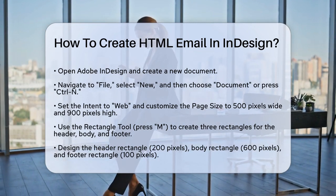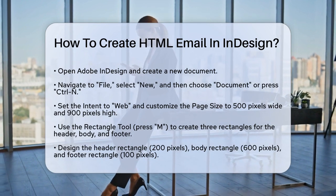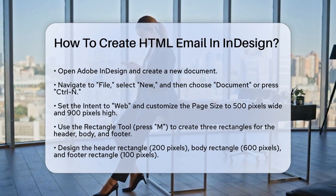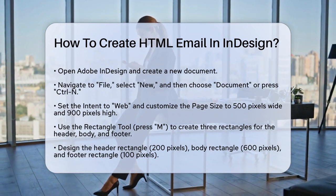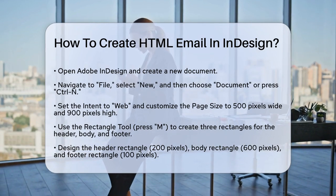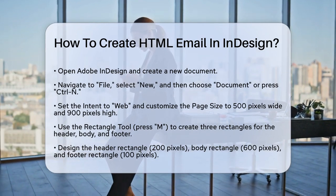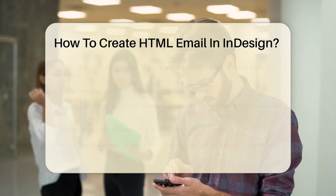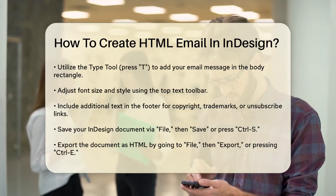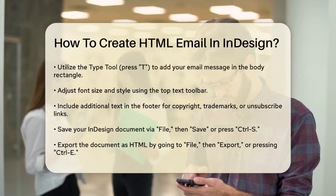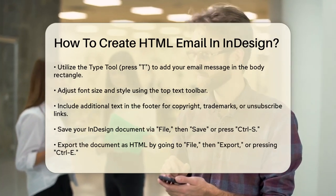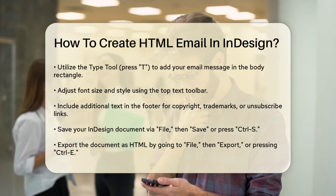Next, use the Rectangle tool or press M to draw rectangles that will represent the header, body, and footer of your email. For example, create one rectangle for the top 200 pixels, another for the center 600 pixels, and a third for the bottom 100 pixels spanning across the entire width.